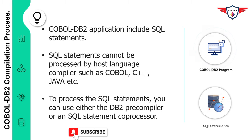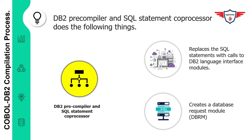COBOL DB2 applications use SQL statements to perform various data manipulation operations, and SQL statements cannot be processed by host language compilers such as COBOL, C++, or Java. To process the SQL statements used in a COBOL program, you can use either the DB2 precompiler or an SQL statement co-processor provided with the compiler. These perform two important functions: first, replacing SQL statements with calls to the DB2 language interface module, and second, creating a Database Request Module (DBRM).